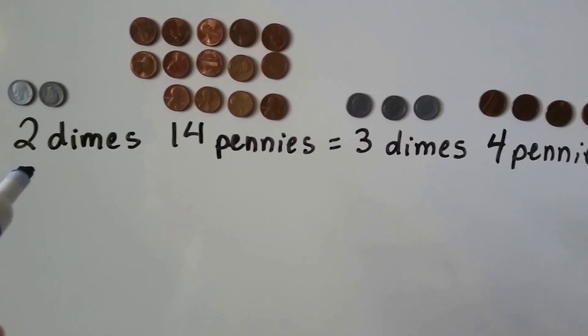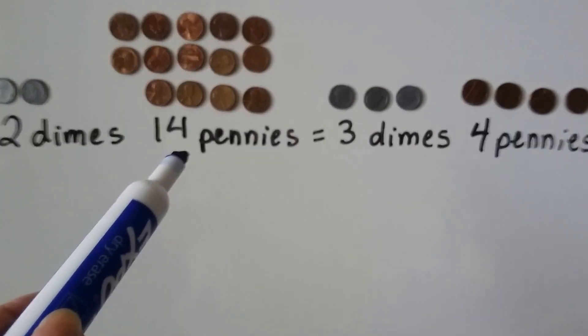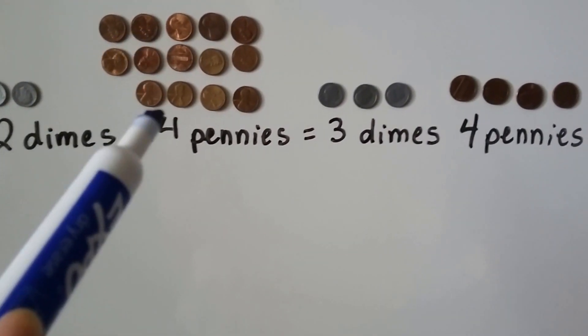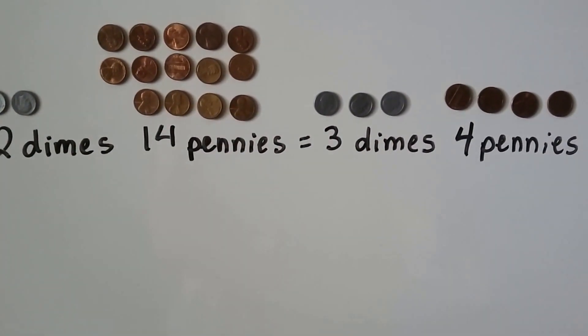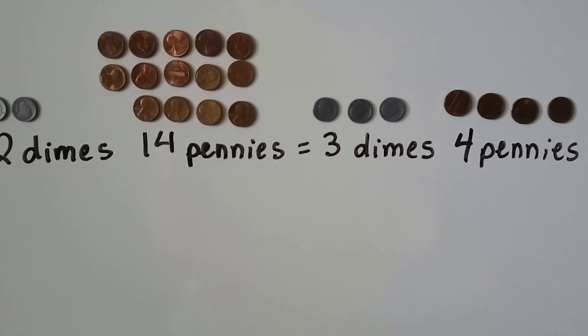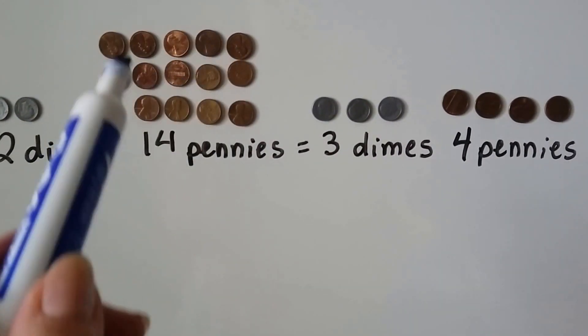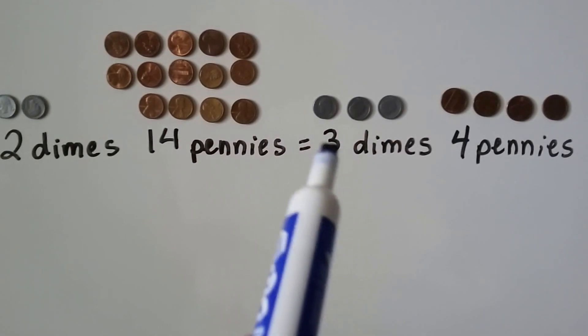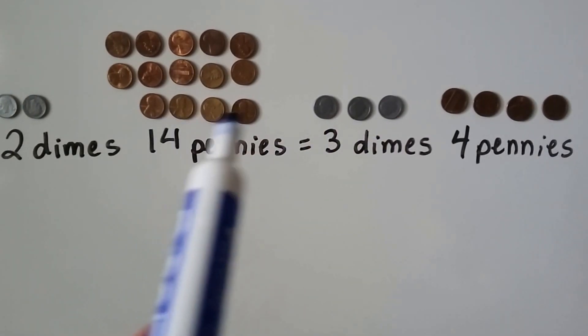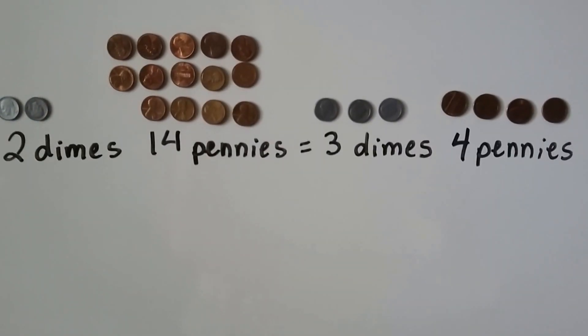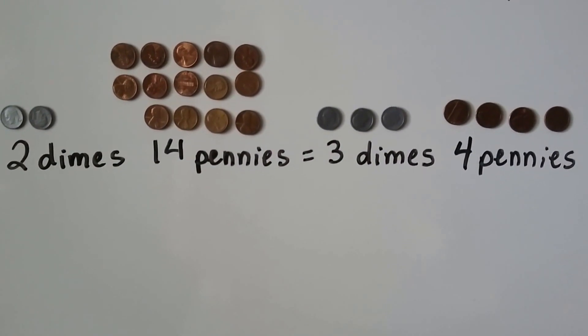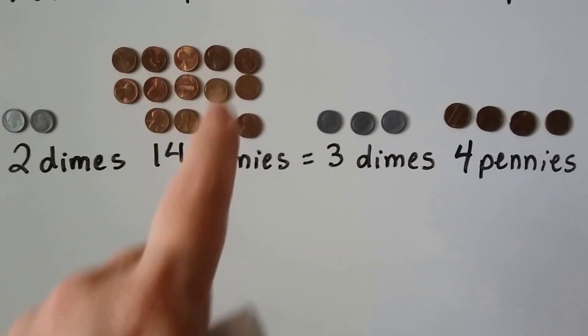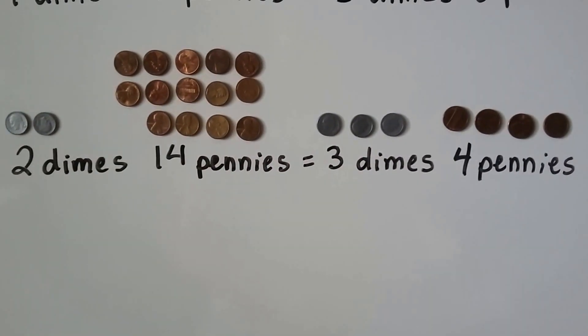Here we have two dimes and 14 pennies. We have 10, 11, 12, 13, 14 pennies. We can trade in these 10 pennies for a dime and have three dimes and four pennies. So every time we get 10 pennies, we can trade it for a dime, for a ten.